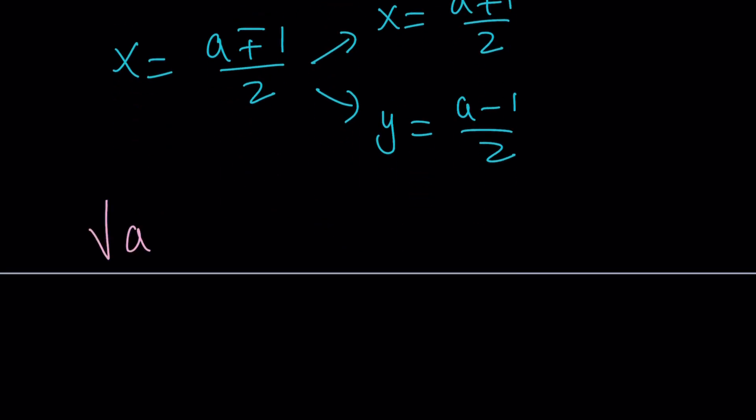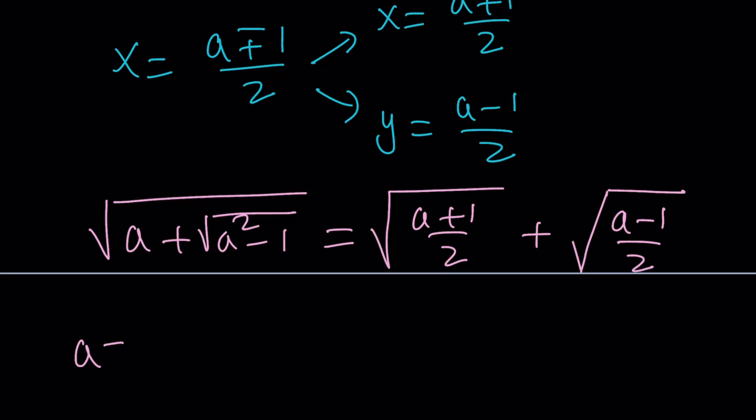The square root of a plus the square root of a squared minus 1 can be written as the square root of x, which is the square root of a plus 1 over 2, plus the square root of y, which is the square root of a minus 1 over 2. Again, we can switch these around. It doesn't matter. Nice? Maybe. Who knows? But if you go ahead and check it out, for example, for a equals 4, the left-hand side is going to equal the square root of 4 plus root 15, as you know from before. And the right-hand side is just going to be the square root of 5 halves plus the square root of 3 halves.